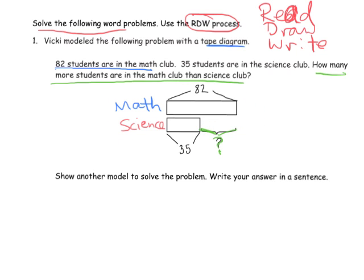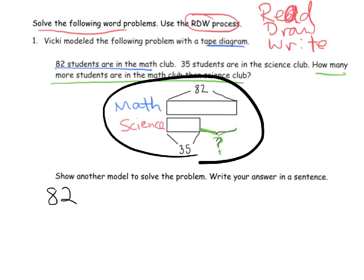Now the question is saying show another way to model this problem. It took me a little while to figure out what else I would do because this drawing seems pretty perfect. But another way to model this would be to represent it as a subtraction problem: 82 minus 35. We can solve that problem. We're going to unbundle a 10, giving us 12 ones instead of 2. Then 12 minus 5 is 7, and 7 minus 3 is 4.